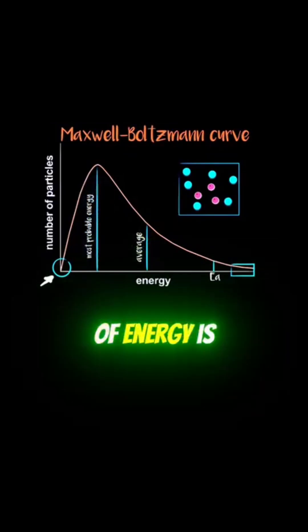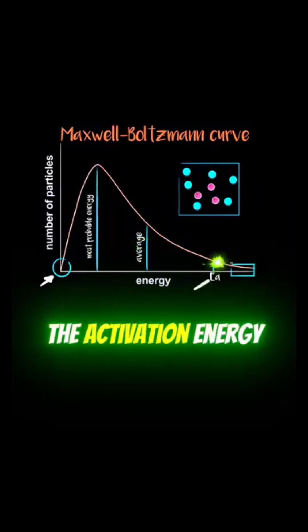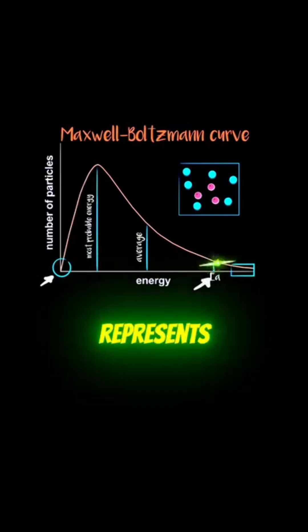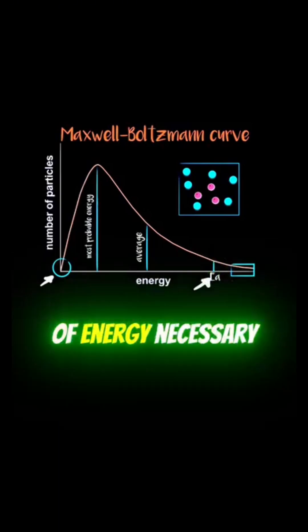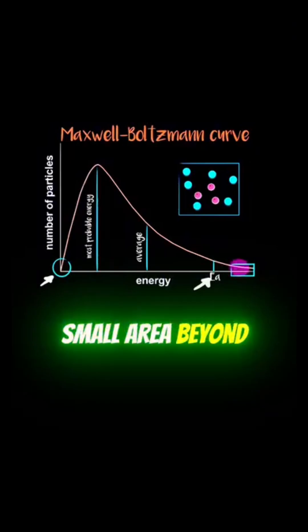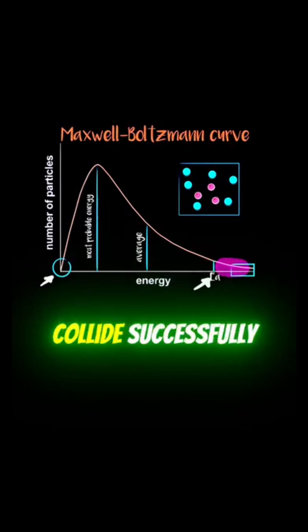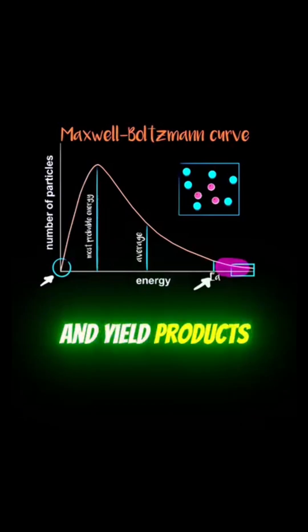The average amount of energy is shown halfway through the x-axis. The presence of the activation energy or EA represents the minimum amount of energy necessary for the reaction to occur. The small area beyond EA represents the number of particles that have enough energy to collide successfully and yield products.